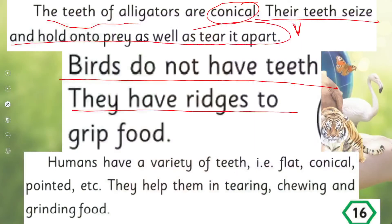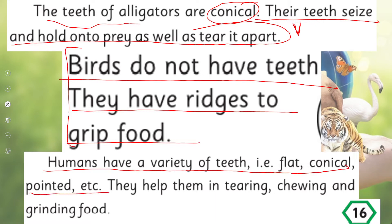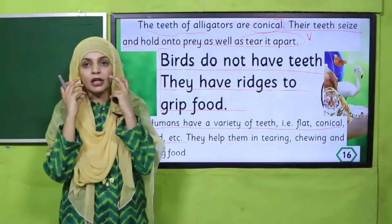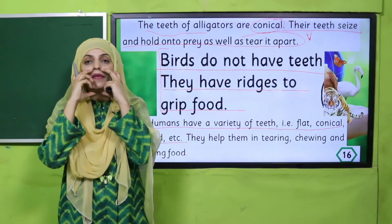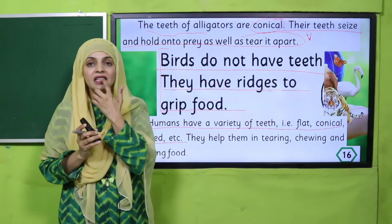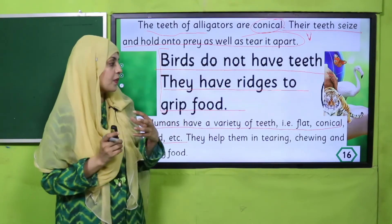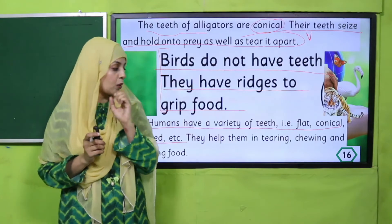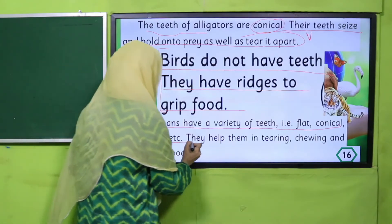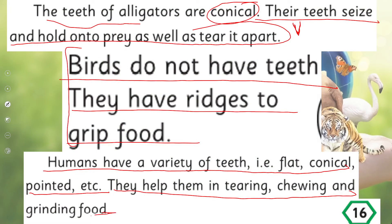Birds do not have teeth — inke paas beaks hoti hain aur ridges hoti hain to grip their food. Humans have a variety of teeth — flat, conical, and pointed. Jo hamare mooh mein daant hain, yeh mukhtalif types ke hote hain. They help us in tearing, chewing, and grinding the food.